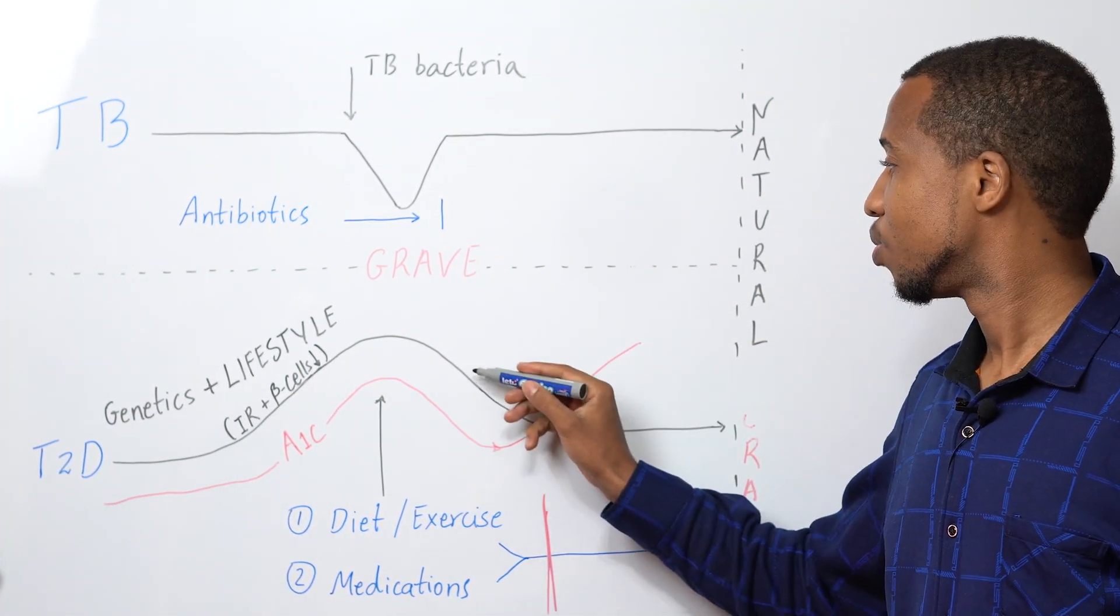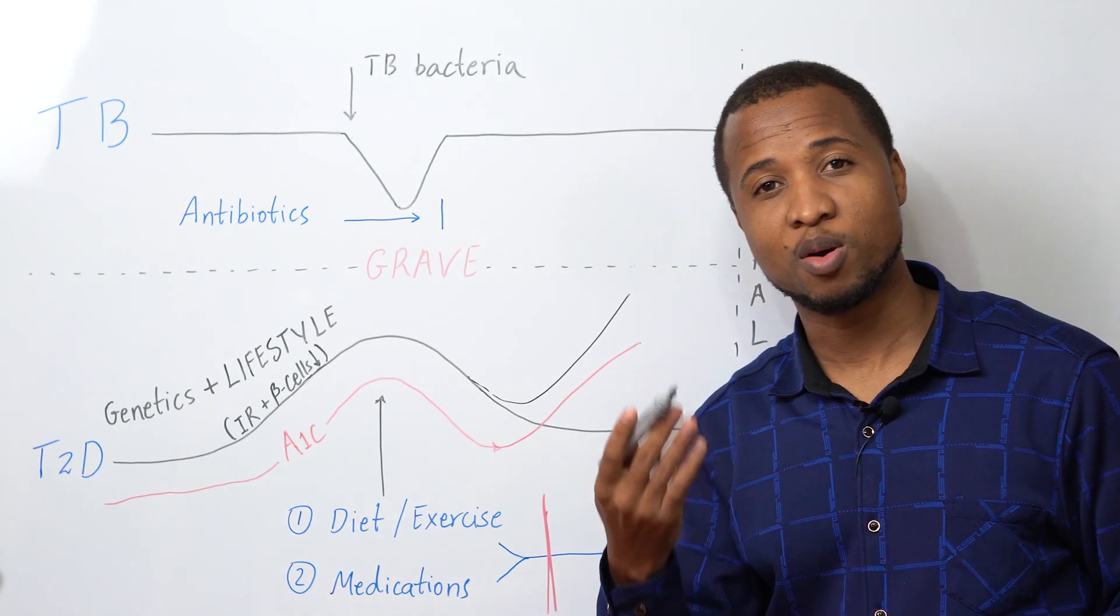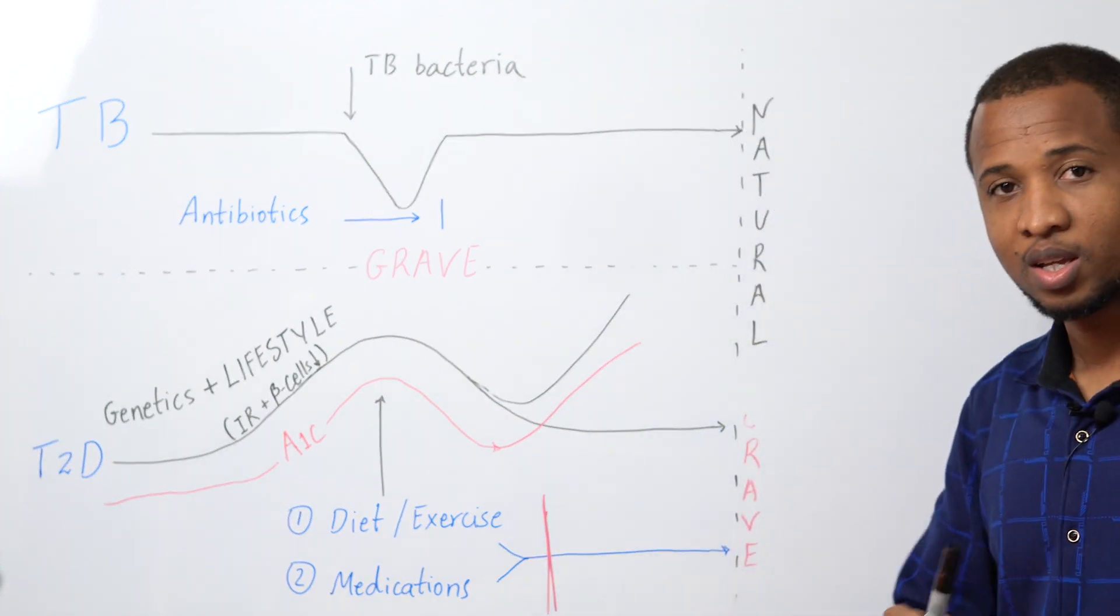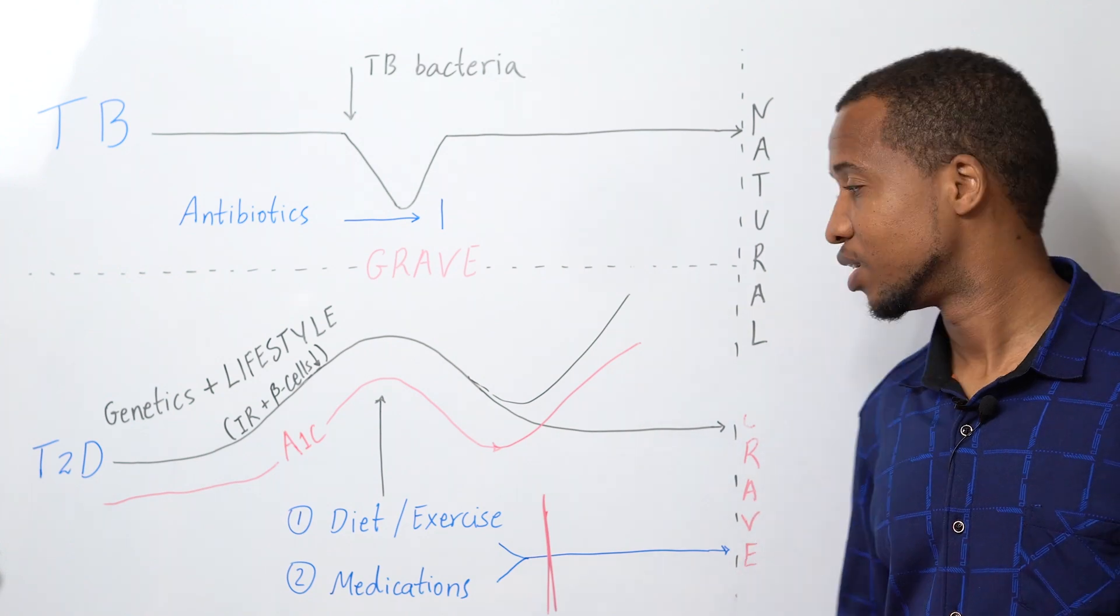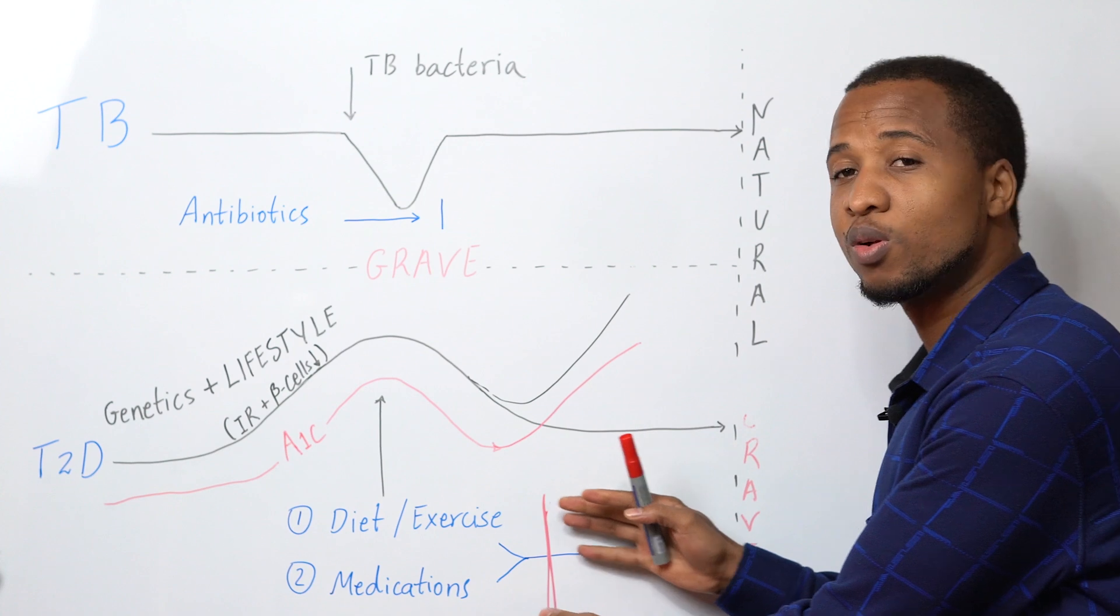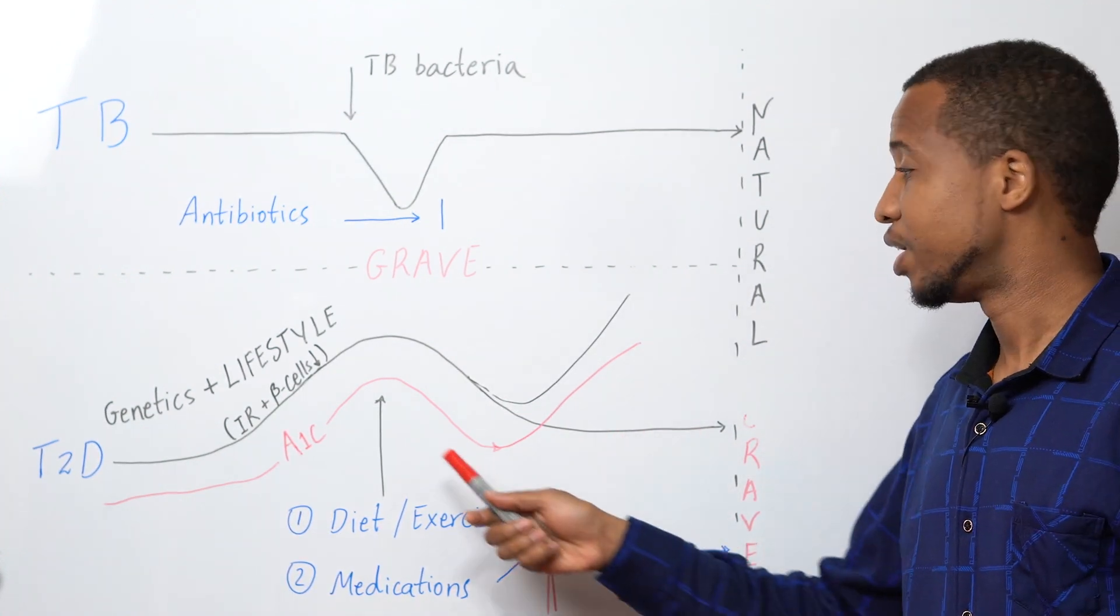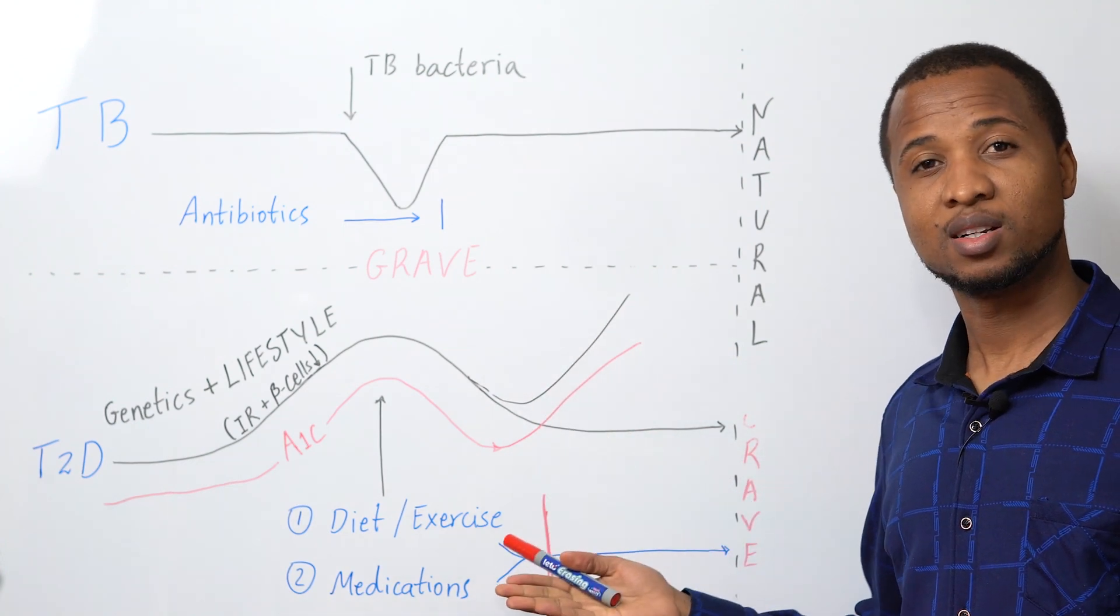And your life will start going back to... And this is the main reason why we say that we cannot cure diabetes. We can control it, but we need to control these things forever. If we start, the A1C will go back up and you are still diabetic.